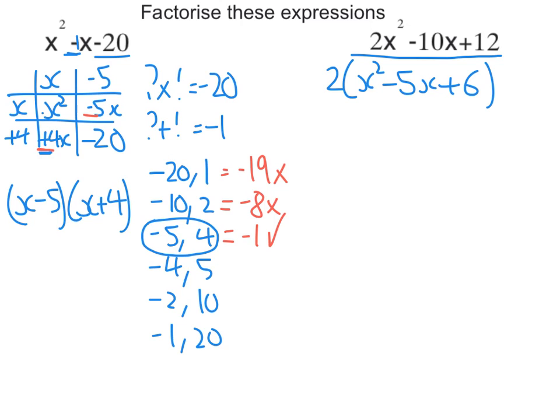Now I factorize like I've done before with the grid. I'm going to draw my grid out, put in the new x squared term and the new constant term, which is 6. I'm looking for two numbers that times to get 6 but add to get negative 5.